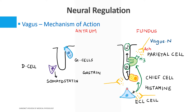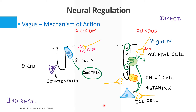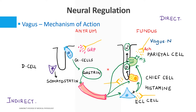There is also an indirect action of the vagus nerve. The vagus acts on G cells via a different neurotransmitter — GRP, that is gastrin-releasing peptide — to stimulate G cells to produce increased gastrin. This gastrin moves through the circulation and reaches the enterochromaffin-like cells to produce more histamine, the chief cells to produce more pepsinogen, and the parietal cells to produce more H+.